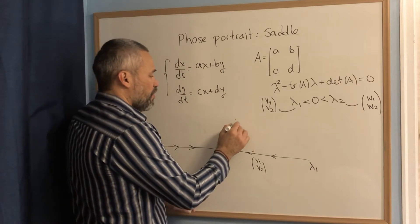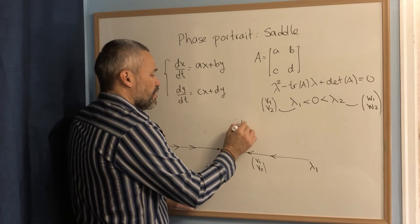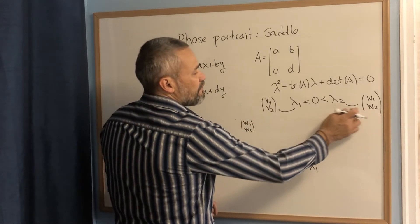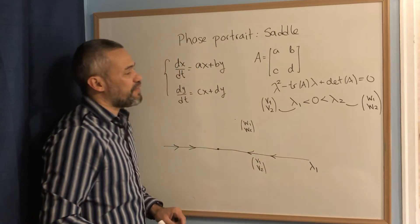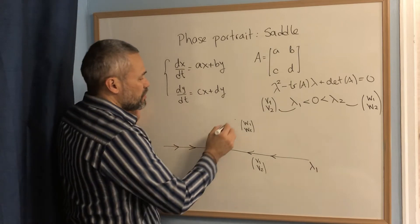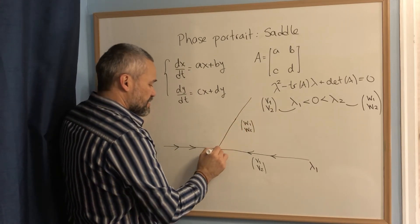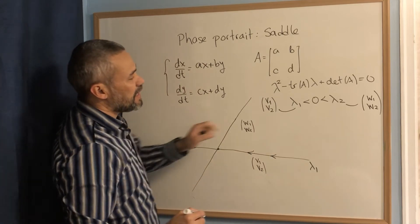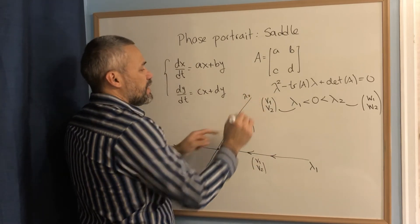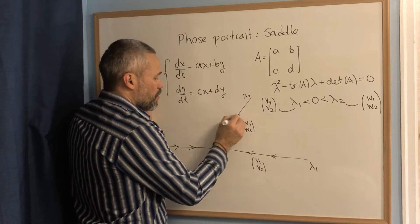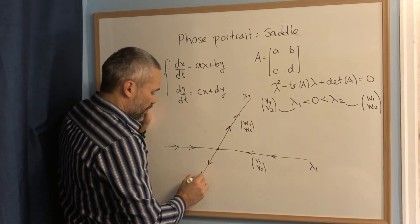We also plot the point w1, w2. That is the eigenvector that we found associated with the eigenvalue lambda two. And we draw the line. And this line is to be seen as two semilines. And since lambda two is positive, then the arrows go away from the origin.